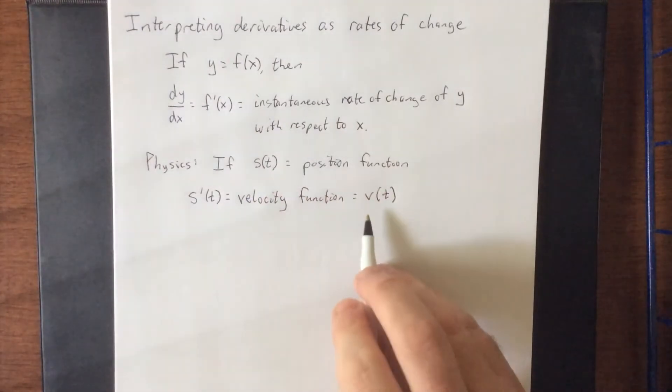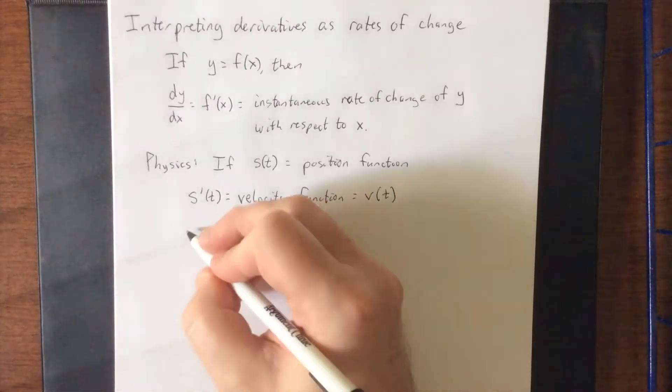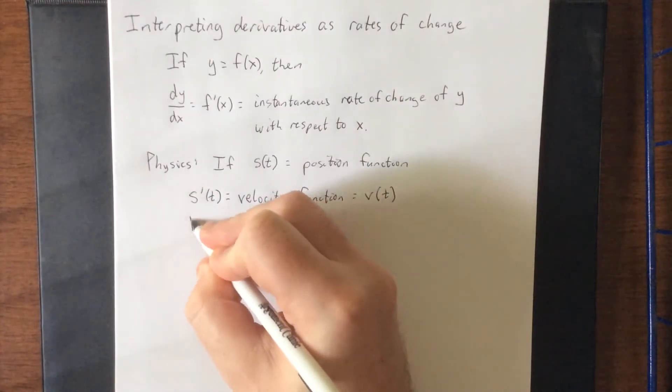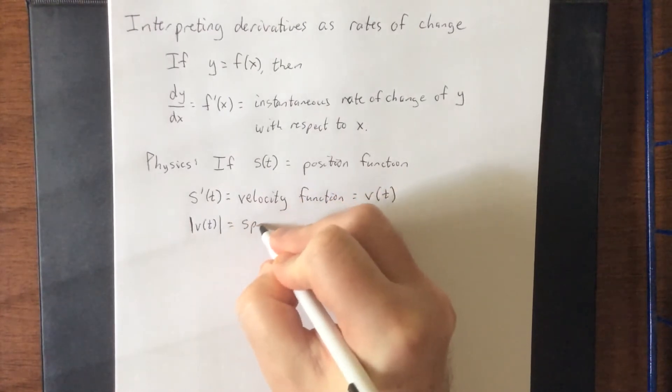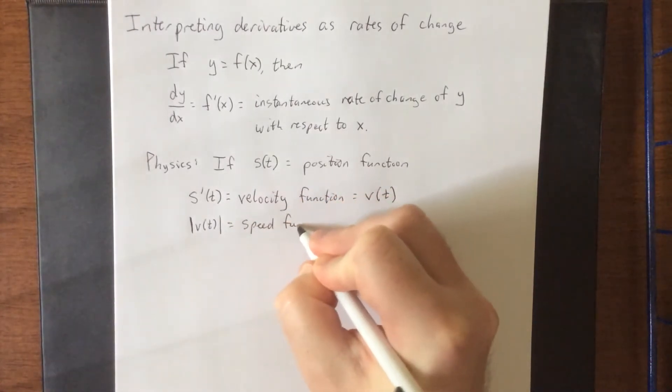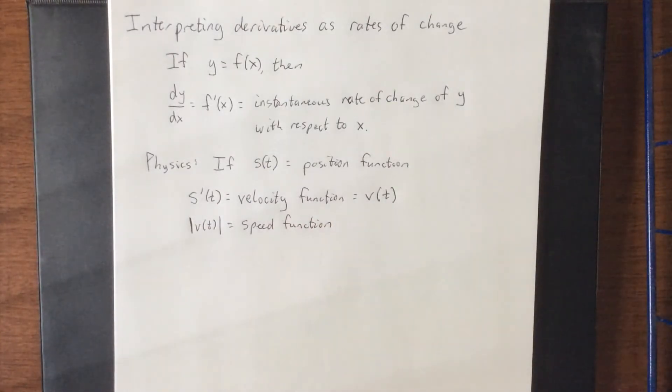Now, velocities could potentially be positive or negative, depending on how you define something's forward motion versus backward motion. So if you take away the forward versus backward or up versus down of this, you get what's known as a speed function. So the absolute value of velocity is going to be a speed function.